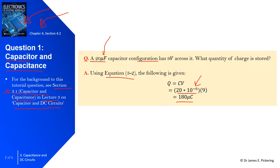You can see it's effectively just 9 multiplied by 20 which is 180, with the unit being 10 to the power minus 6. Capacitance multiplied by voltage gives us coulombs.